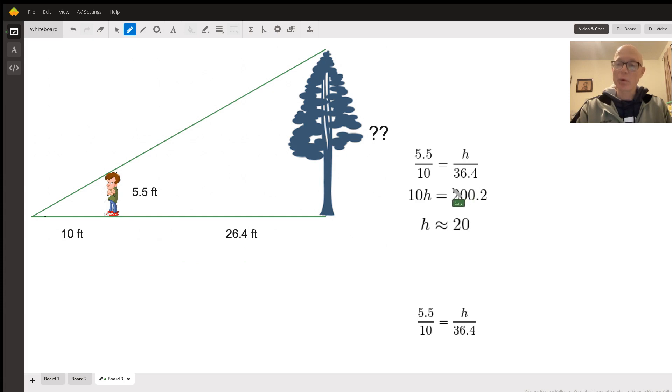So when you have a proportion, you can count on the cross products being equal. In other words, 10 times H, which I wrote here as 10H, is equal to 5.5 times 36.4, which appears here as 200.2.